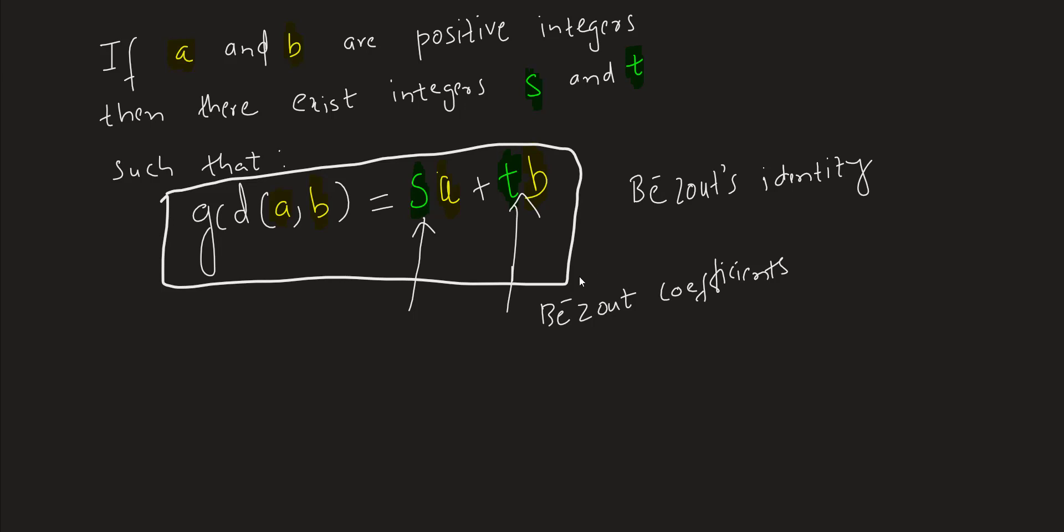Whenever we have determined the GCD of a and b, that value can also be expressed in terms of this Bézout identity. It should strictly have the values both a and b in them. If we want it to strictly follow the Bézout identity, it should have the values a and b in it. Now let's try to understand it with an example.